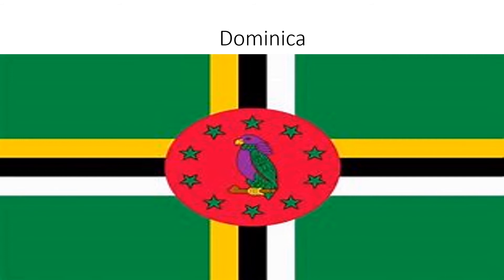Dominica: there is a cross that is yellow, black, and white, and in the middle there's a circle with a parrot. One, two, three, four, five, six, seven, eight, nine, ten green stars around the parrot, and there are green squares in all corners of the flag.